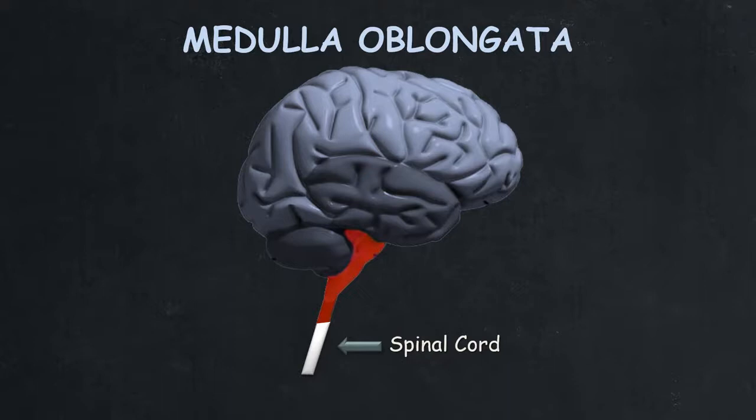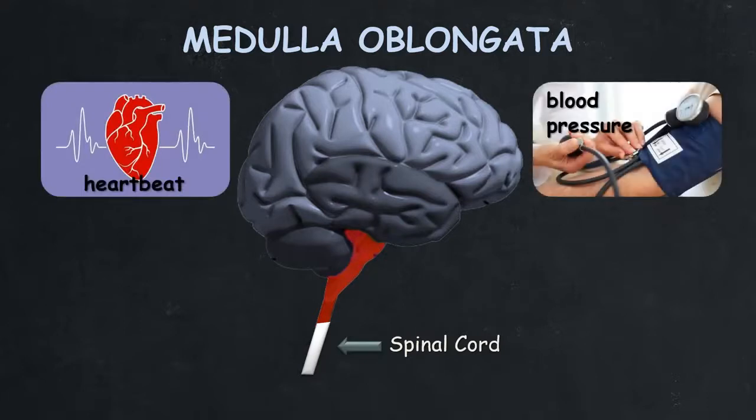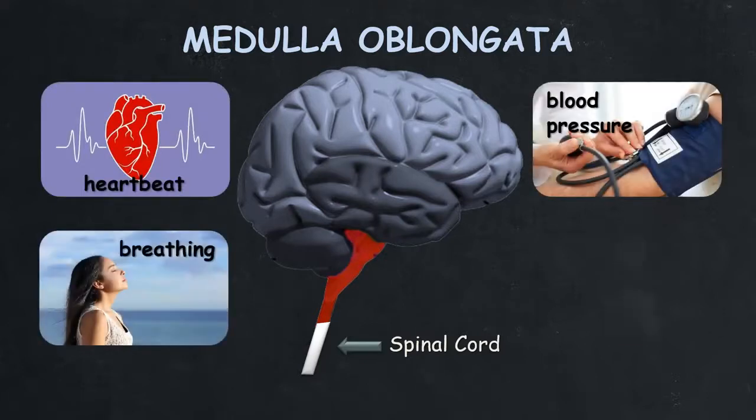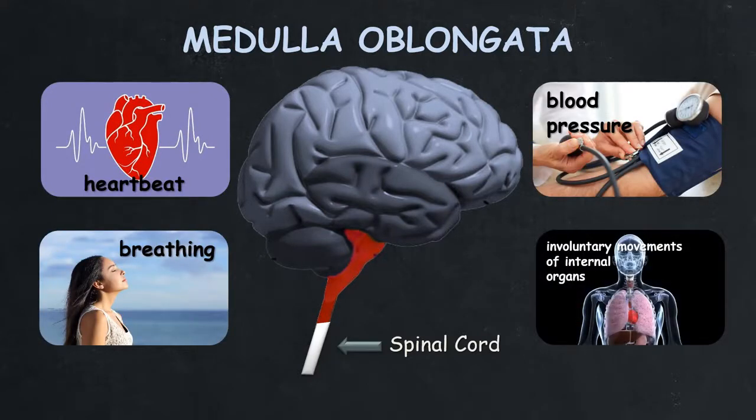Then to the different parts of the body. Aside from that, the brain stem or medulla oblongata controls your heartbeat, blood pressure, breathing, and the involuntary movements of the internal organs.